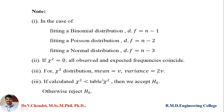How do we conclude using chi-square? If the calculated chi-square — that is, summation of (O minus E) whole square divided by E — is less than the table chi-square value, then we accept H₀. Otherwise, we reject H₀.